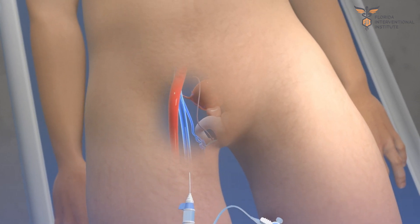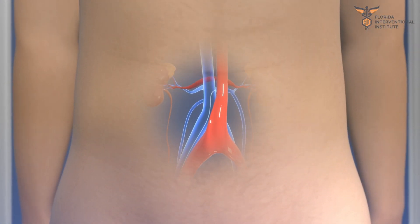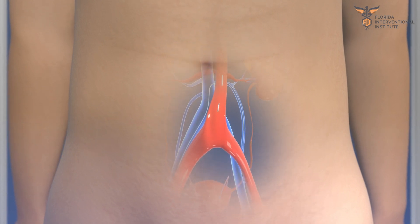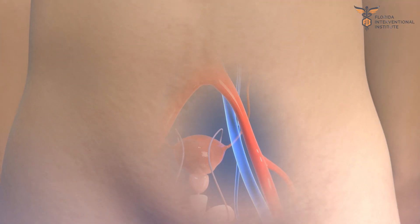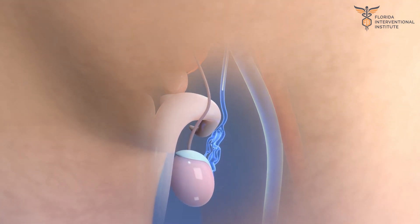This catheter is then carefully directed into the gonadal vein by your doctor using the guidance from x-rays. The catheter is then further guided down in the gonadal vein towards the testicle.